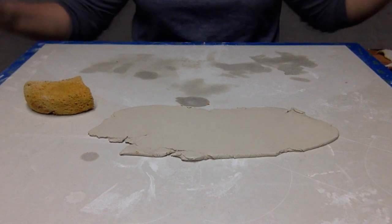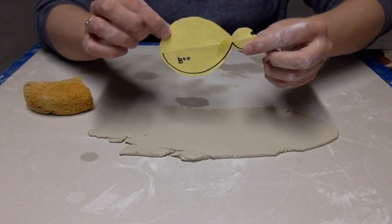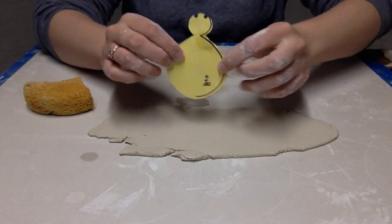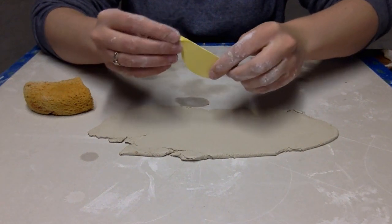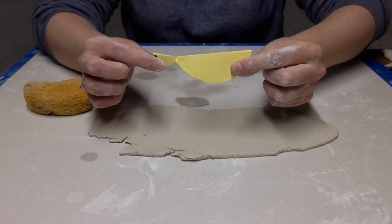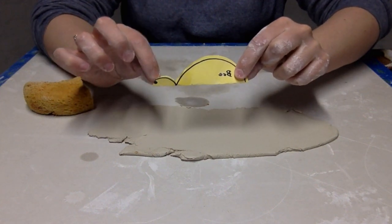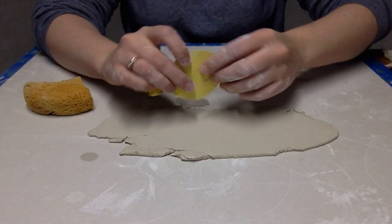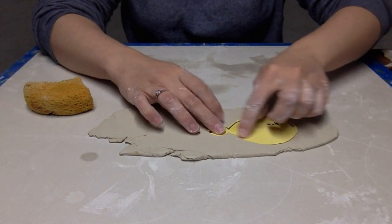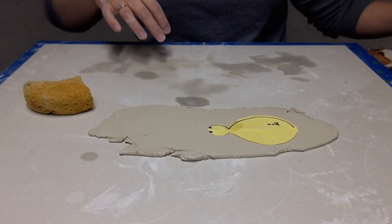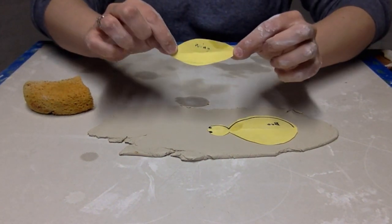The next step is to roll out another slab for your bee. I used a paper template cut from construction paper to make my bee shape. I folded the construction paper in half so that my bee would be symmetrical. Place the template to one side of the slab and get the wing template to use on the other side of that same slab.